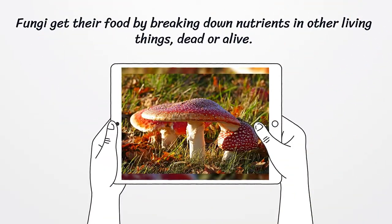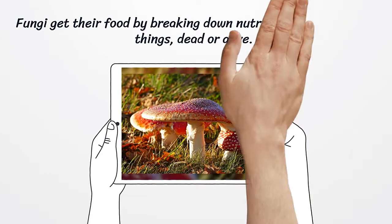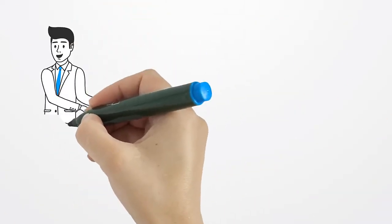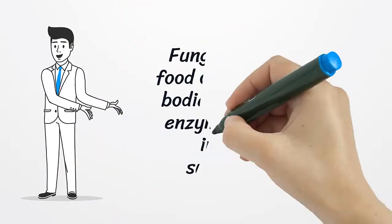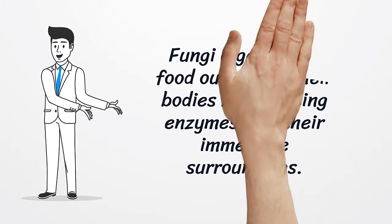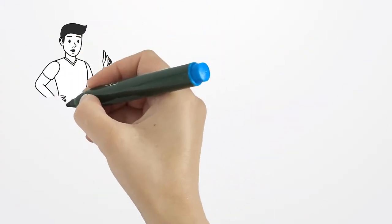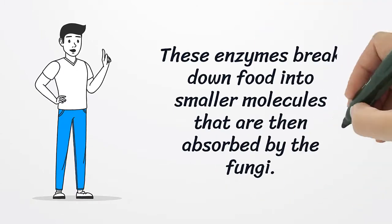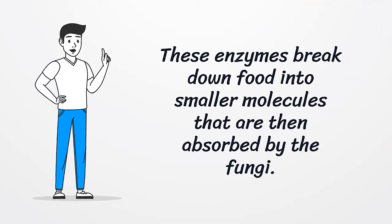Fungi get their food by breaking down nutrients in other living things, dead or alive. Fungi digest their food outside of their body by secreting enzymes into their immediate surroundings. These enzymes break down food into smaller molecules that are then absorbed by the fungi.